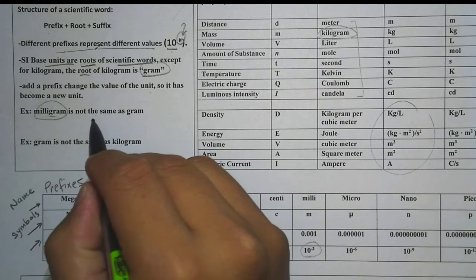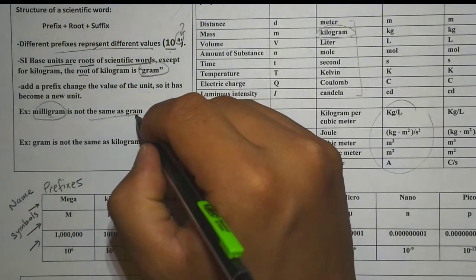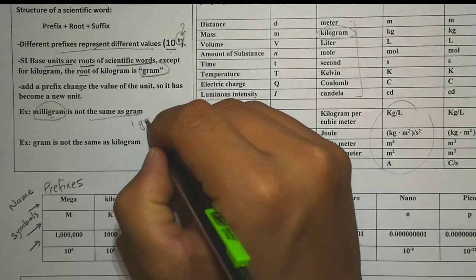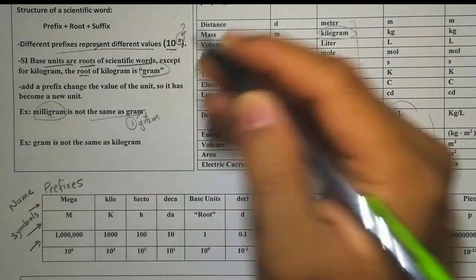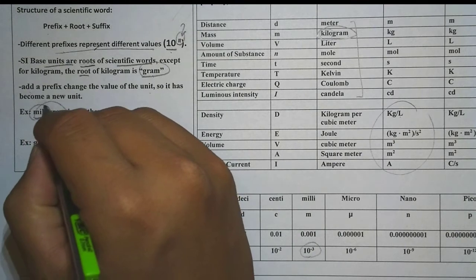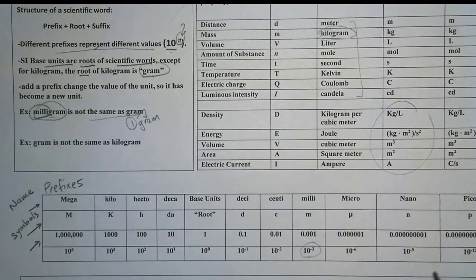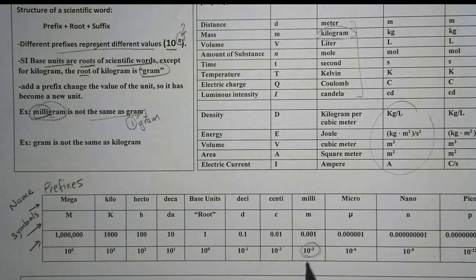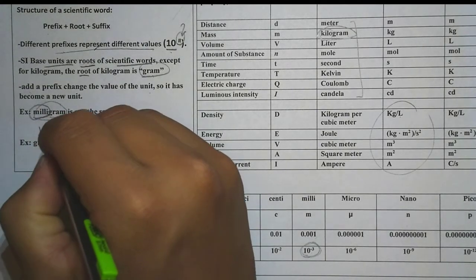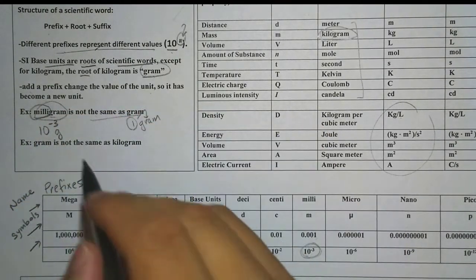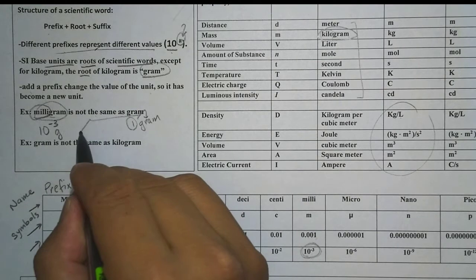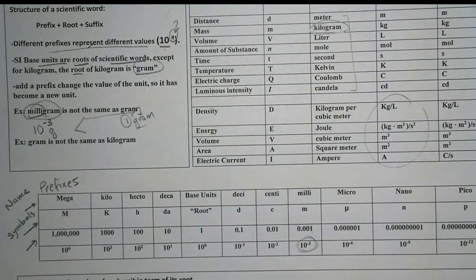For example, we have milligram — it's not the same thing as gram. Gram by itself is just one gram, because one represents the identity of that particular substance. But when we have the prefix milli, that milli actually represents 10 to the negative third, or 0.001 in decimal. So milligram is actually 10 to the negative 3 grams — it is a lot smaller than a gram. You can see how these two are completely different units.